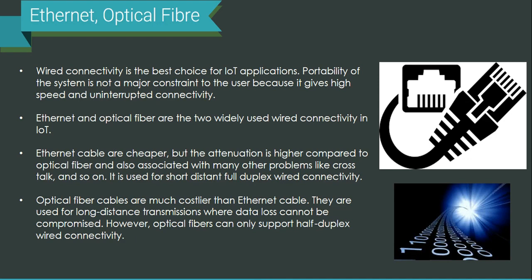When portability is required, wired connectivity might not be a good option. Wired connectivity gives you high-speed, uninterrupted connectivity and it is always preferred. Ethernet and optical fiber are the two widely used wired connectivity options in IoT. When your system doesn't require portability, you can go with wired connectivity, and the choice lies between Ethernet and optical fiber.